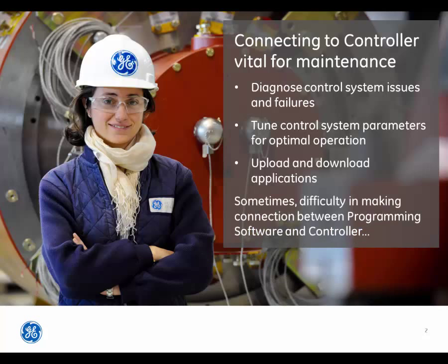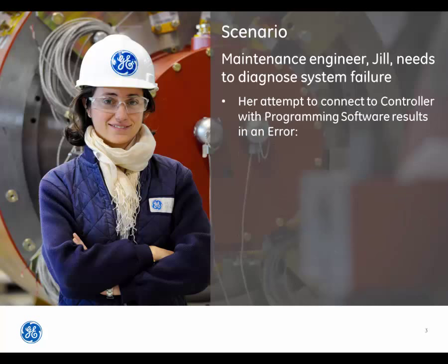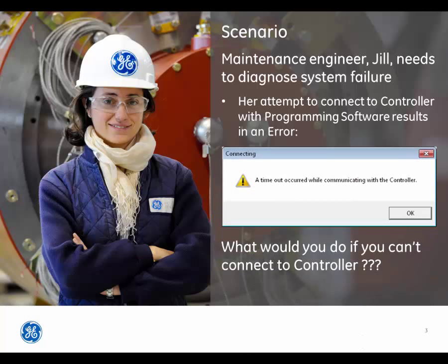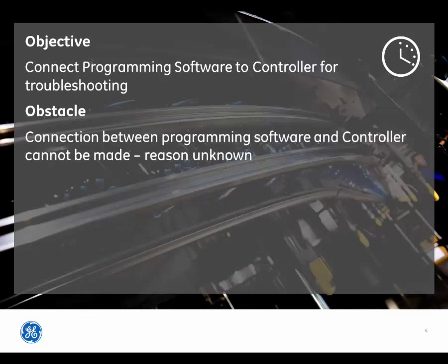Sometimes there is difficulty in making the connection between the programming software and the controller. In this scenario, Maintenance Engineer Jill needs to diagnose the system failure. Her attempt to connect to the controller with the programming software results in an error. The objective of this Maintenance Minute is to connect the programming software to the controller for troubleshooting. The obstacle is that the connection between the programming software and the controller cannot be made, for a reason that is unknown.